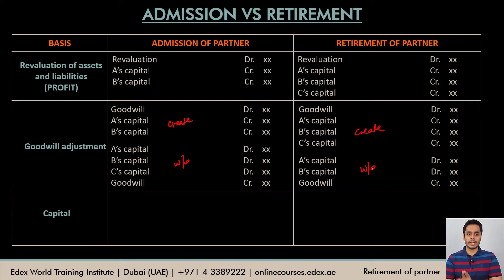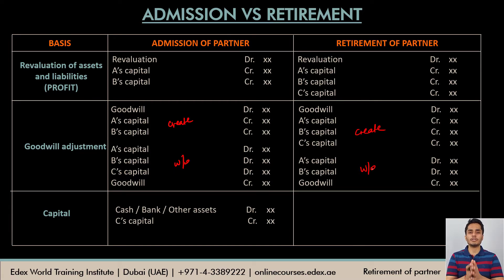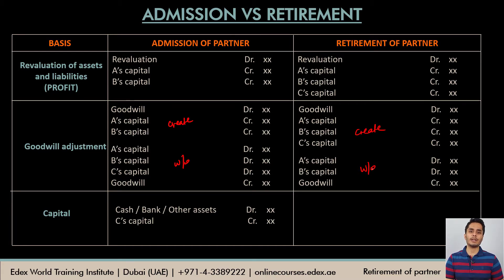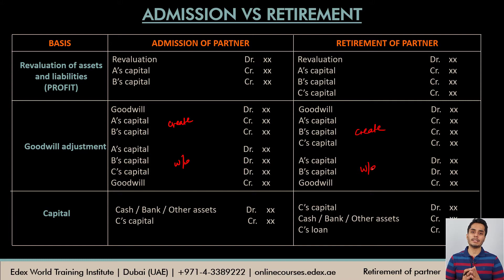In the admission question, the new partner was bringing in capital, so assets were debited and the new partner's capital was credited. Here in retirement, the firm will have to repay back the capital amount to the partner — that could be in the form of cash, bank, or any other asset. At times, the firm may not be able to repay the entire amount immediately, so the remaining amount is transferred to the partner's loan account, to be settled in future. The retiring partner's capital account is debited to close it, assets given are credited, and any remaining balance is credited to the loan account.